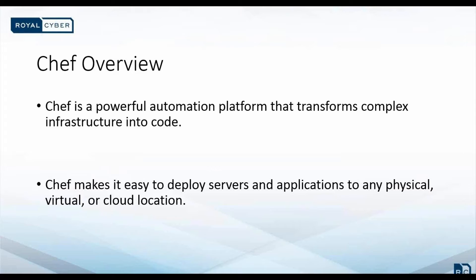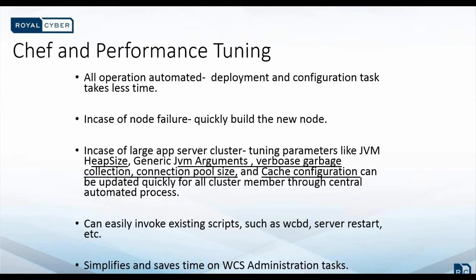Chef is built around a simple concept — centralized modeling of IT infrastructure. In a Chef-based infrastructure, all operations are automated, so less time is required for all admin tasks, especially for production environments. Chef decreases downtime and production releases are more error-free. For any node in production environment that fails or behaves unexpectedly, we can build new nodes very quickly. During tuning phase, updating configuration parameters is very quick — we need to update the parameter file only, and in Chef that parameter file is called a data bag.